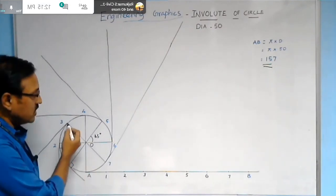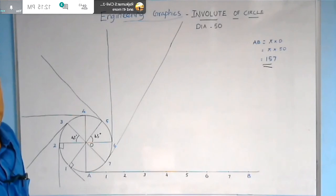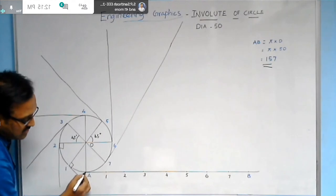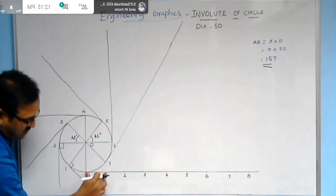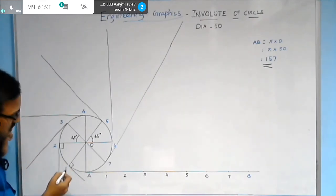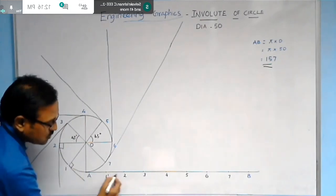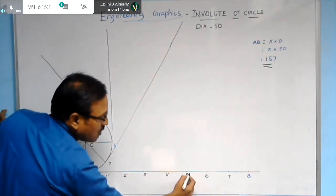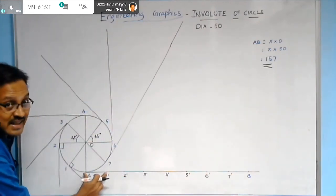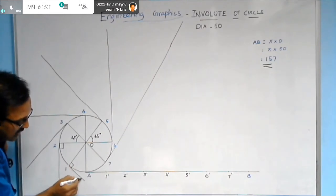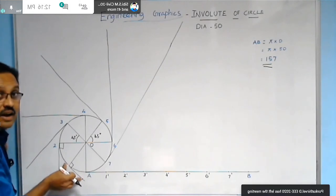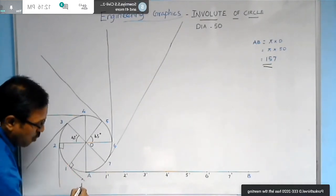Label the division points on AB as 1', 2', 3', 4', 5', 6', and 7' to avoid confusion. Measure length A1' in your compass, then with point 1 as center and A1' as radius, cut an arc on the tangent at point 1. This intersection point is called 1''.